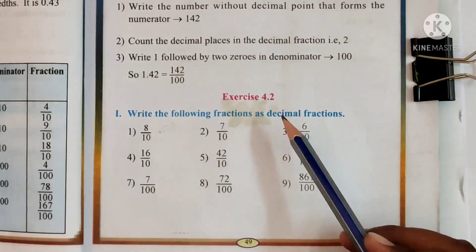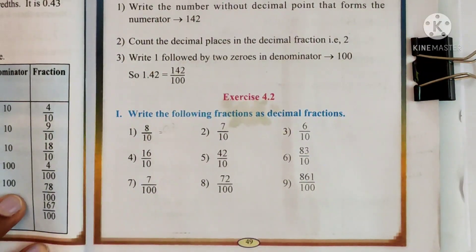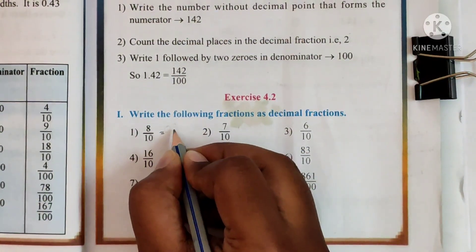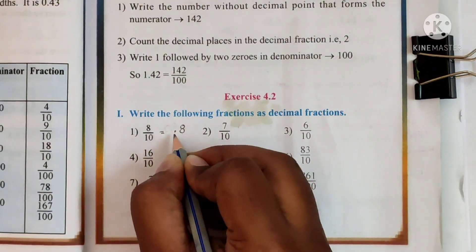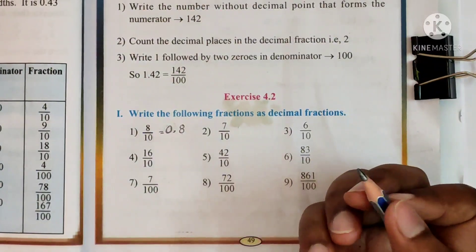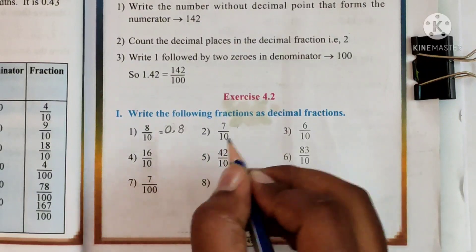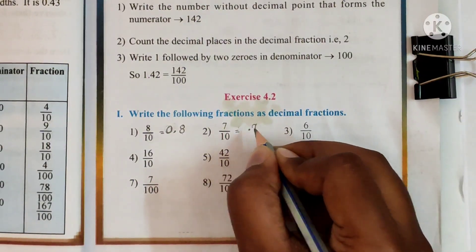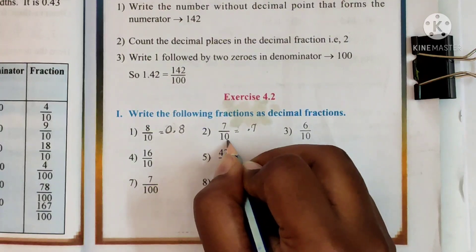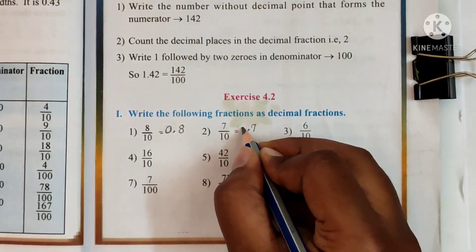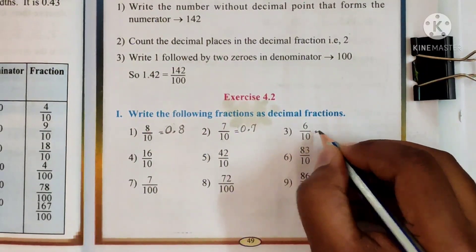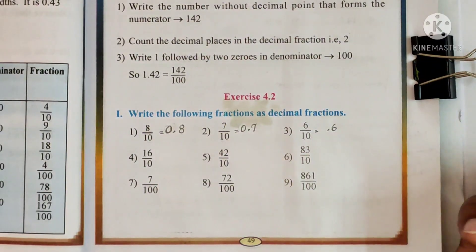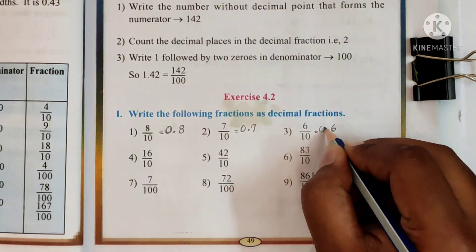So let us solve the exercise from the reader, Exercise 4.2, page 49: write the following fractions as decimal fractions. Number 1: 8 tenths — you have 1 zero in the denominator, so 1 number after the decimal point. Write 8, then write 0 towards the left since you have no other numbers. Number 2: 7 tenths — write 7, after 1 number put a decimal point since there is 1 zero in the denominator, and write 0 to the left. Number 3: you have 6 in the numerator and 1 zero in the denominator, so put a point after 1 number, then write 0.